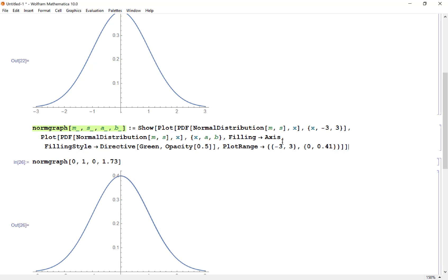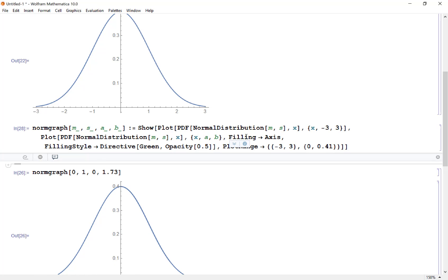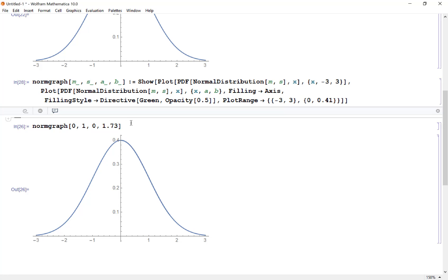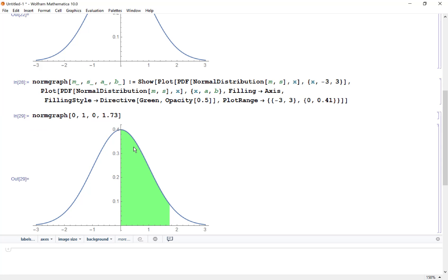Okay, so now I've added these extra features here and what this means is I'm going to have a filling down to the axis and I'm going to fill that with green with an opacity of 0.5 and I want my plot range to stay negative 3 to 3 in the x direction, 0 to 0.41 in the y direction and so now when I hit shift enter, there it gives me the shaded region from 0 to 1.73. The original plot would just be from negative 3 to 3, that's the entire blue curve, the second one is just the green area.